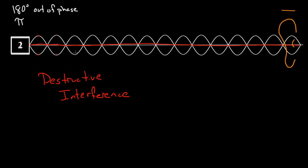This is how noise-canceling headphones work. If you take a signal from the outside and send in the exact same signal but flipped — pi out of phase, or 180 degrees out of phase — it cancels it. So you can fight noise with more noise, but exactly out of phase, and you get silence, or at least close to it.